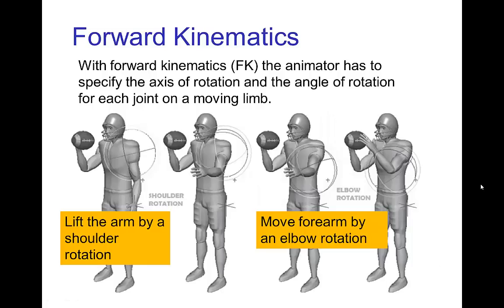In animation, in order to position the limbs in a pose — specifying the various angles for the joints in order to establish a pose — one way of doing this is with forward kinematics.